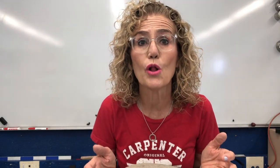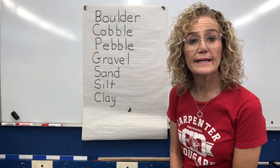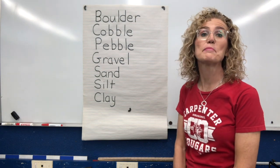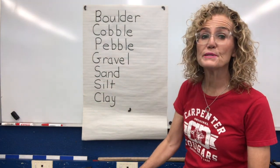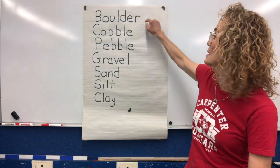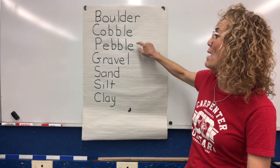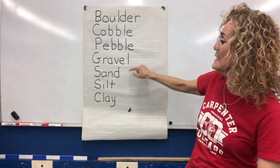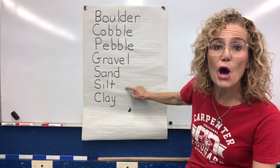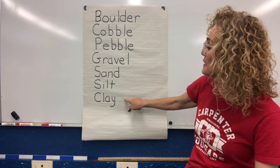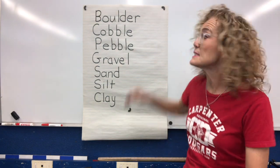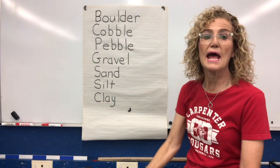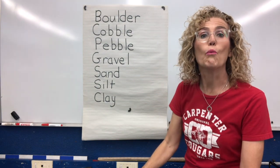A boulder can be the size of a basketball all the way up to the size of a mountain. Scientists like to name things, and they have named the size of every earth material: boulder is the largest, then cobble, pebble, gravel, sand, silt, and the smallest material we're going to learn about next week is clay. Those materials get smaller and smaller because of weathering — weathering is when rocks break into pieces and get smaller and smaller.